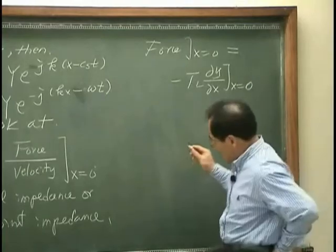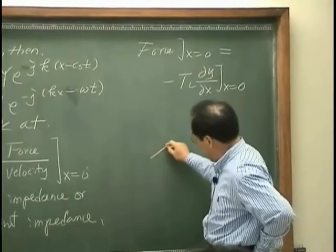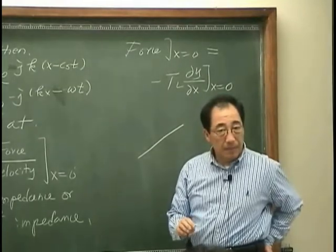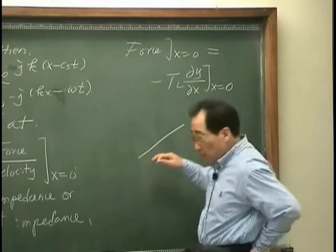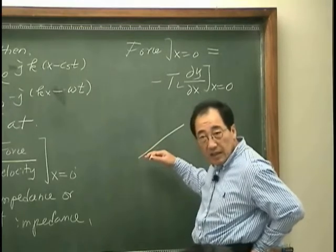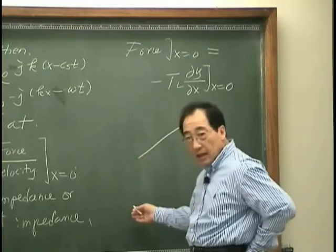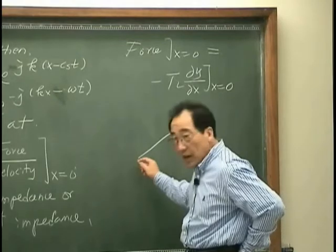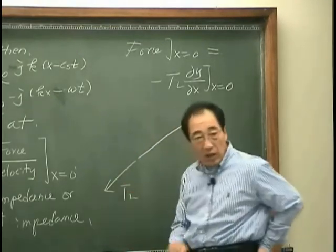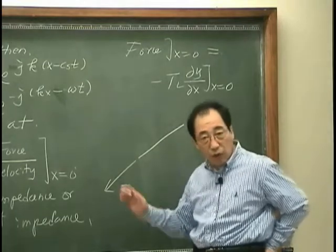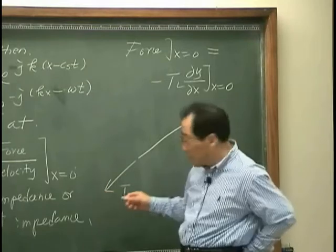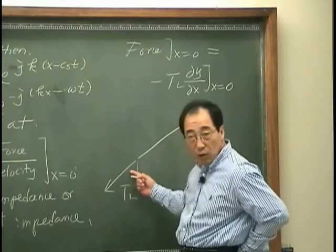Because if you look at the string, when it has a positive displacement, it looks like this. And if we cut the string at x equals zero, we can see there is TL in this direction. Therefore, the force in the y direction has to be minus TL times dy/dx, where dy/dx is the slope.